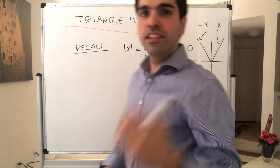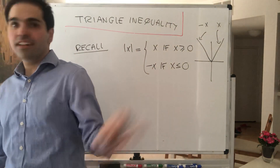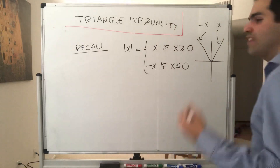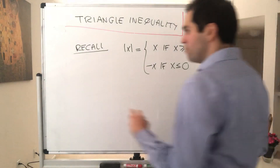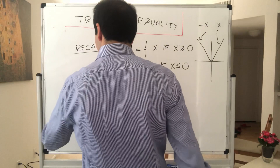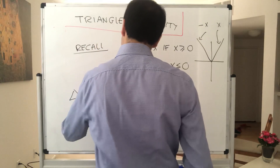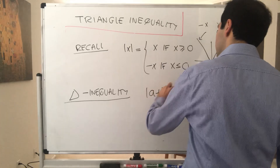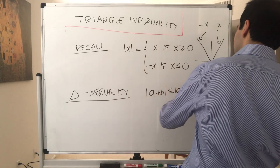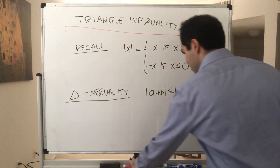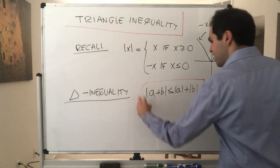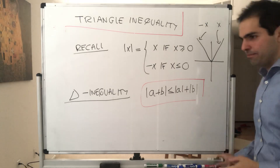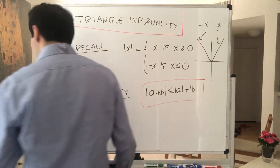With this definition you can prove other nice things, like absolute values are positive, or the absolute value of a·b is the absolute value of a times the absolute value of b. But most importantly, you can state and prove the triangle inequality, which simply says that the absolute value of a plus b is less than or equal to the absolute value of a plus the absolute value of b. It's almost like just taking the absolute values out, but it's important that you have to have the inequality.